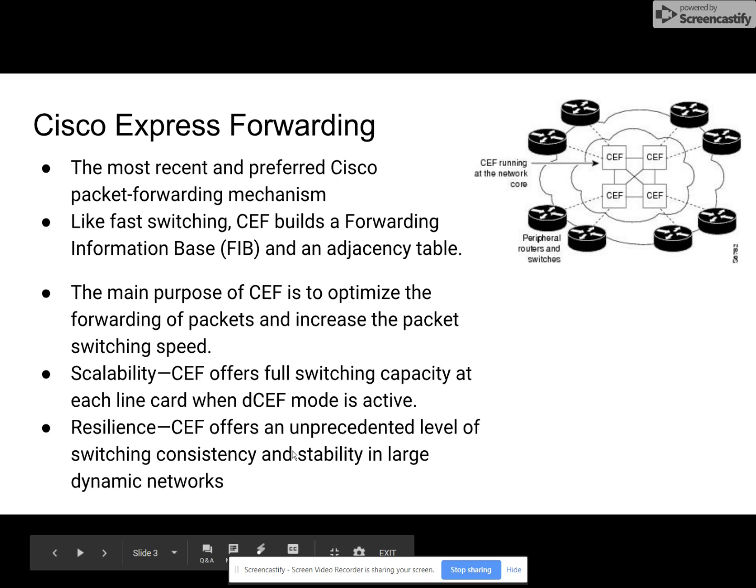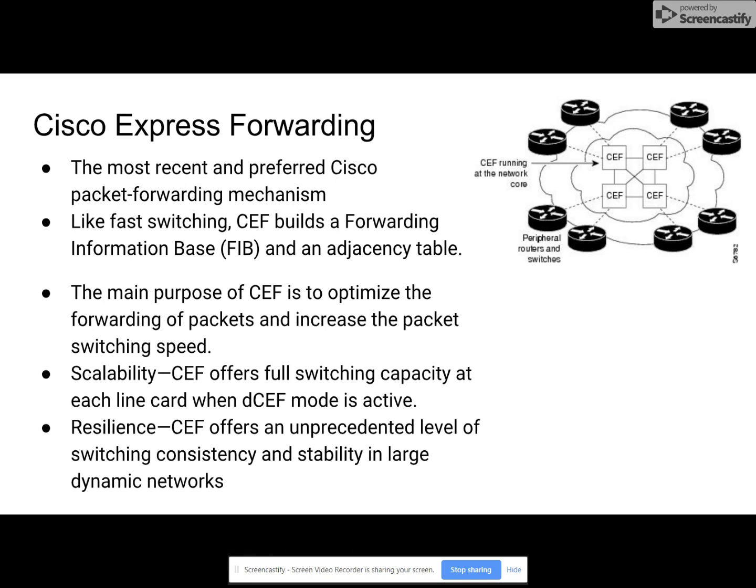Cisco Express Forwarding, or CEF, is the most recent and preferred Cisco packet forwarding mechanism. It uses a forwarding information base and an adjacency table. Its purpose is to increase speed, and it's very stable and consistent in large dynamic networks. CEF can be enabled in two modes: central CEF and distributed CEF. CEF offers full switching capacity, and each line card in distributed CEF mode is active.